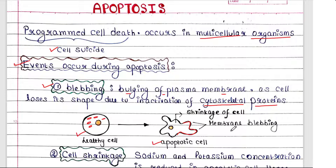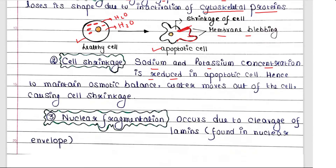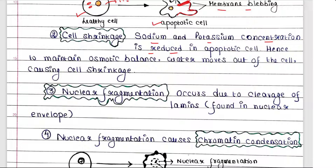These cytoskeletal proteins are inactivated during apoptosis, hence the cell shape becomes distorted — that's why membrane blebbing occurs. Next is cell shrinkage. The cell is shrunken during apoptosis because sodium and potassium concentration is reduced in the apoptotic cell, so to maintain osmotic balance, water moves out of the cell, causing cell shrinkage.